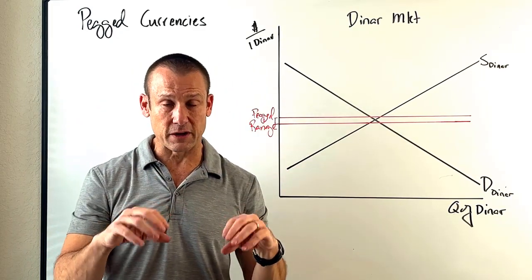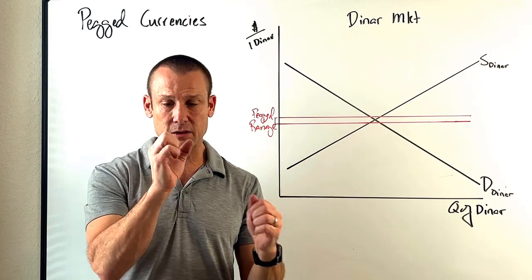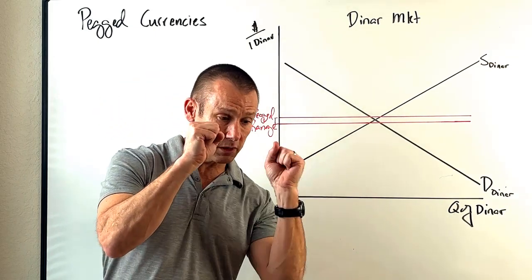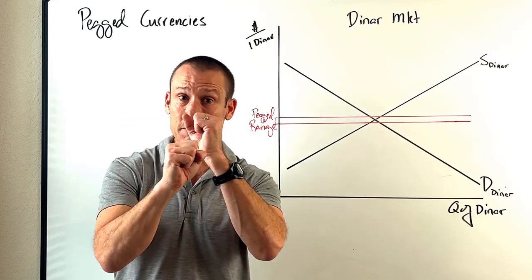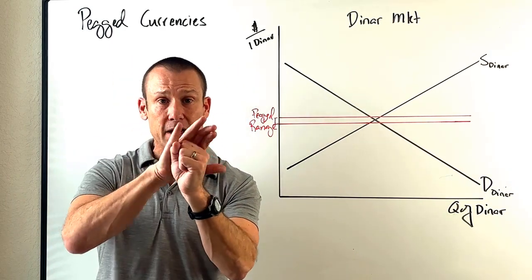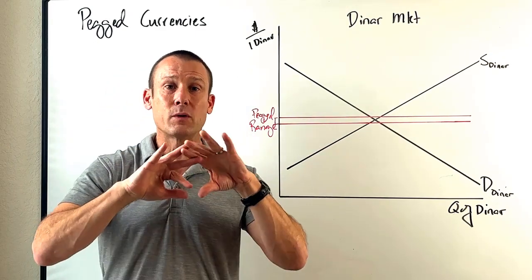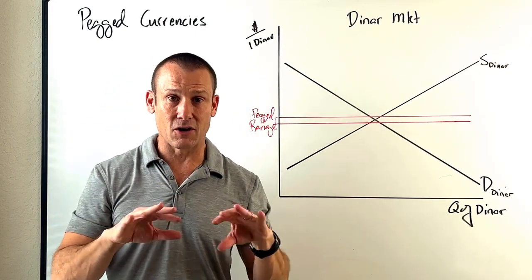So we stopped using the word fixed because fixed again was either I'm fixing my currency to gold or a system in which other people fixed their currency to mine, but mine was fixed to gold or a currency was fixed to gold. Once that tie or fixed to gold broke, we stopped using the word fixed altogether.